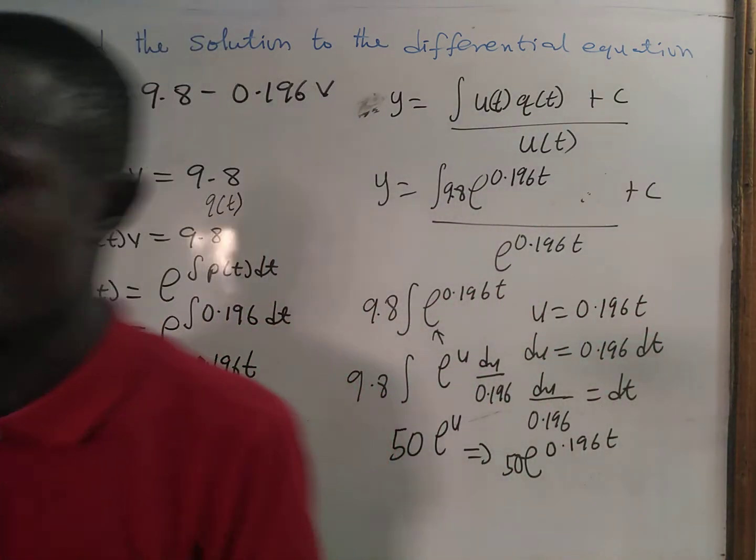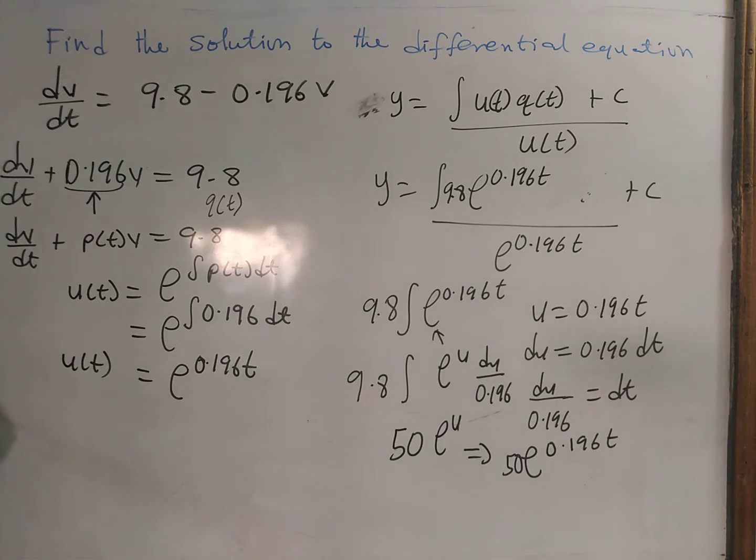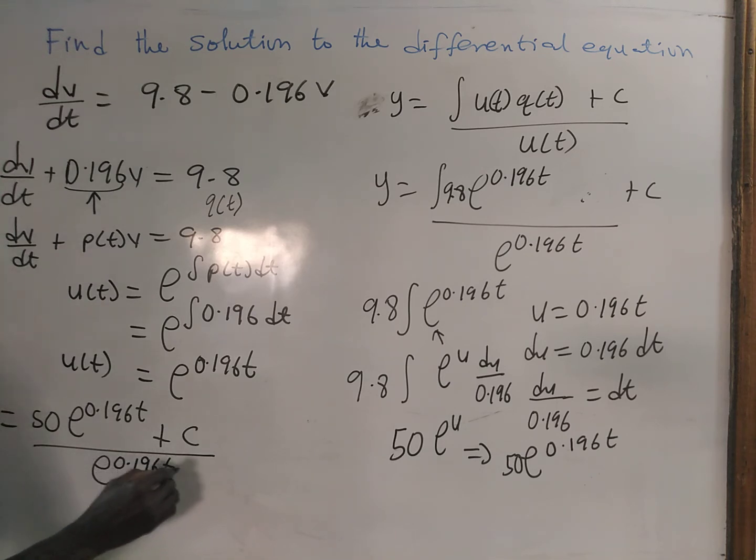So what I am going to write: we have y to be equal to 50 times e to the power 0.196t plus c, all divided by e to the power 0.196t. Now you can do simple division.